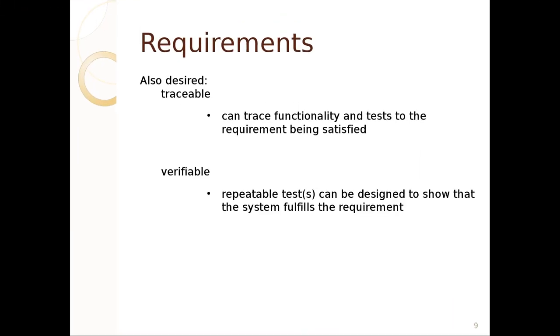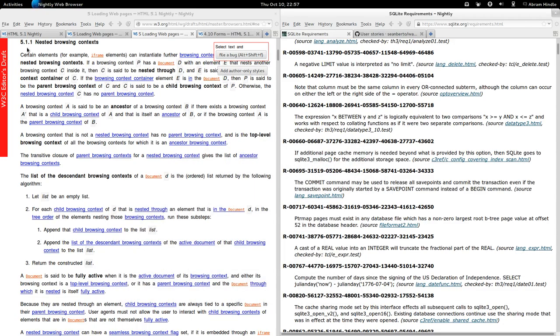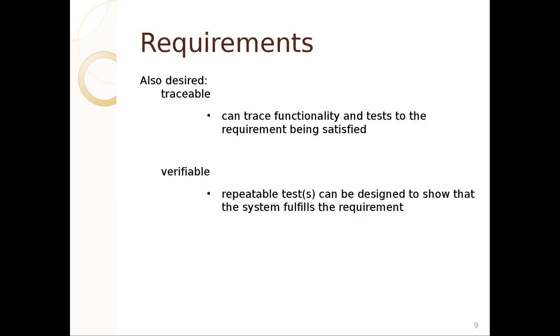Requirements should also be verifiable. That is, you should be able to make repeatable tests and you should be able to design a test to show that the system fulfills that requirement. So if we go and look at that example again, the commit command may be used to release save points. We should be able to make a test where we have a save point and then we test to see if the commit command actually does release that save point. Good requirements are verifiable. We can verify that we met them.